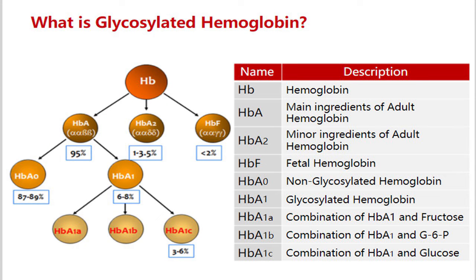In the human body, there are three types of hemoglobin: HbA, HbA2, and HbF. Hemoglobin A is the most common and consists of two alpha chains and two beta chains. HbA2 and HbF are rare types — HbA2 consists of two alpha chains and two delta chains, while HbF consists of two alpha chains and two gamma chains.